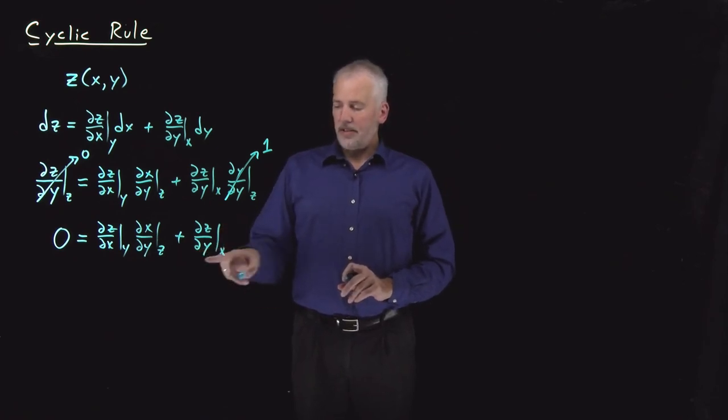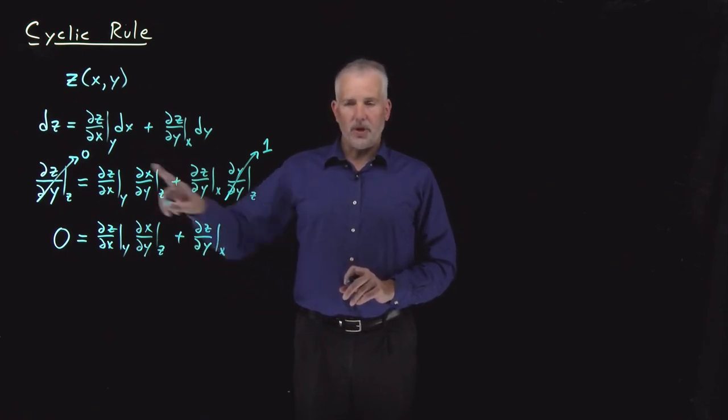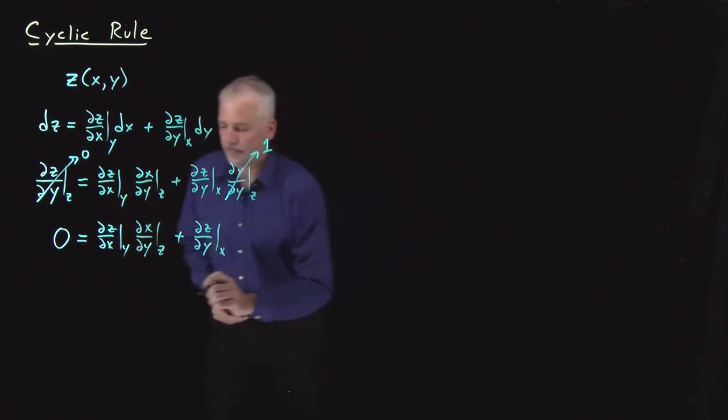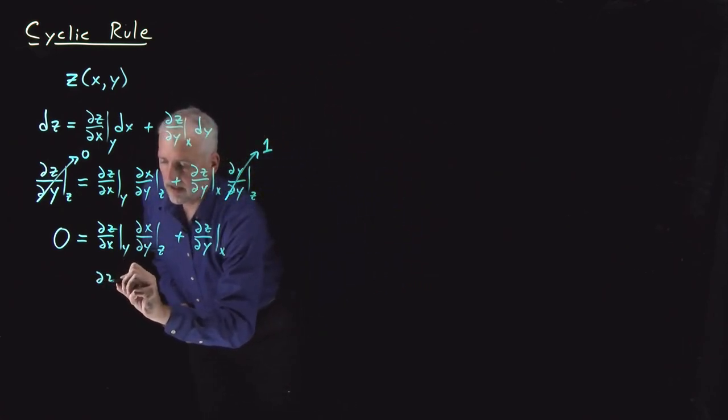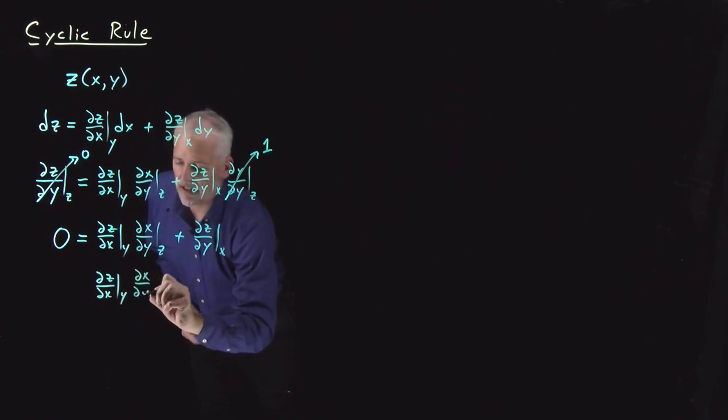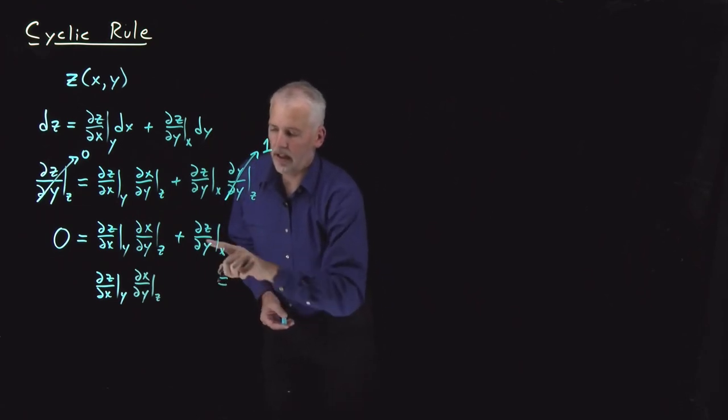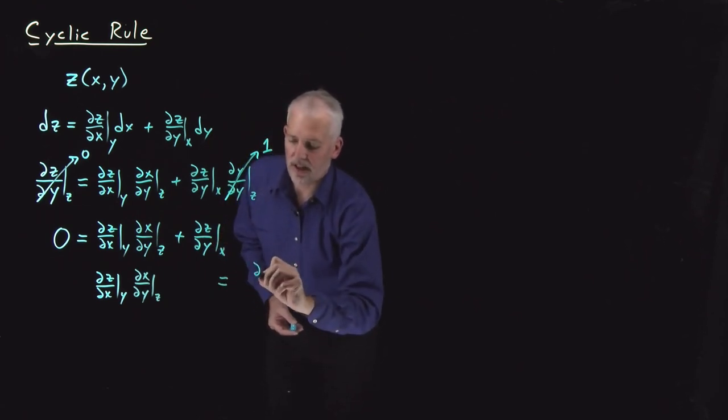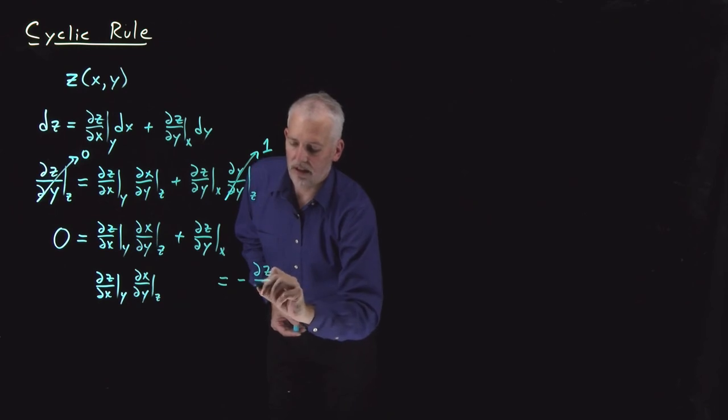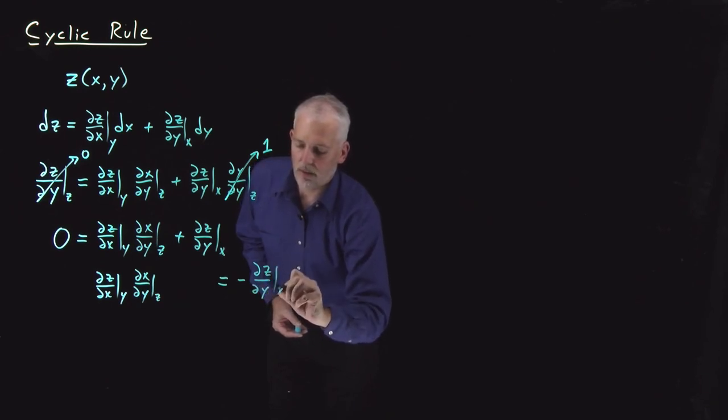That's a perfectly good partial derivative identity. We can clean it up, make it look a little more intuitive. If I take this term, the ∂z/∂y constant x, and put it on the other side of the equal sign. So I'll leave the ∂z/∂x at constant y, ∂x/∂y at constant z, and I'll put the equal sign over here, and I'll move this ∂z/∂y over to the other side so it acquires a negative sign, ∂z/∂y at constant x.